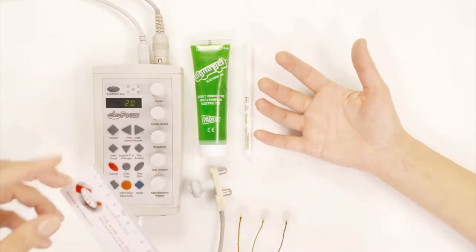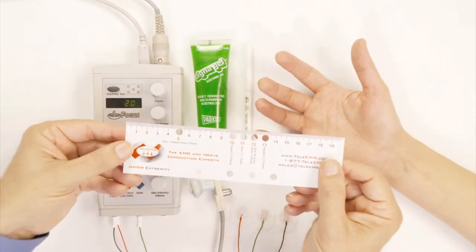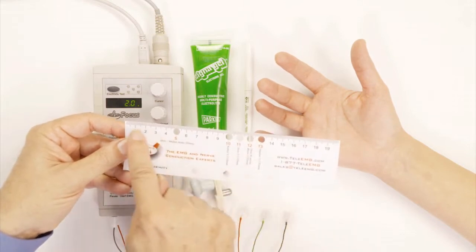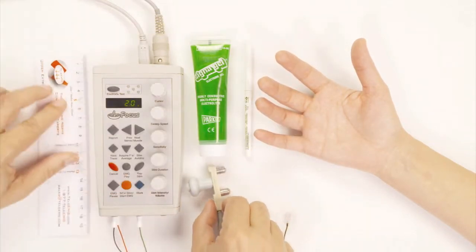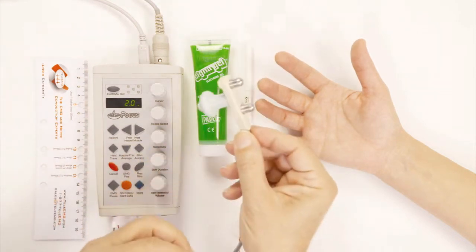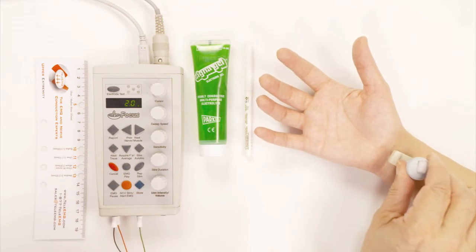So the first thing we're going to do is I'm going to introduce to you the fact that we're going to use a ruler. The ruler is going to tell us what distances we should use to stimulate the nerve. The second thing I'm going to show you is the stimulator. The stimulator is where we actually apply the stimulator to where we're stimulating the nerve right here.